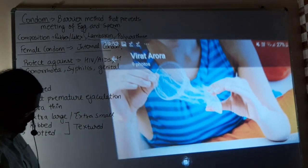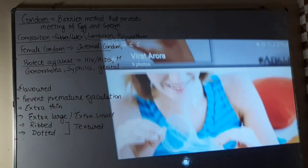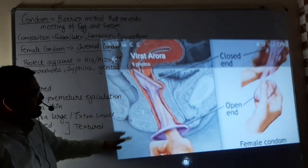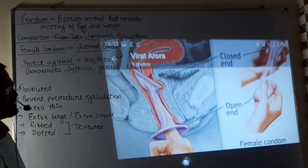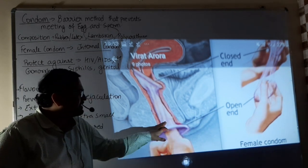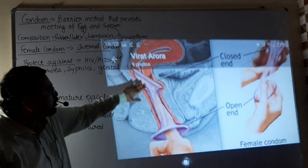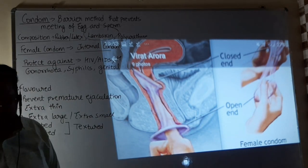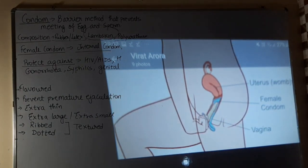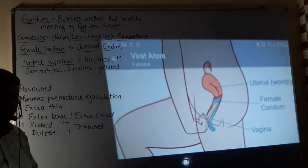This is the method how the female condom is used. Its open end is kept outside the vagina and closed end is kept inside. This is how a female inserts the condom inside her vagina.